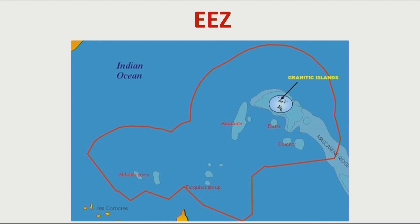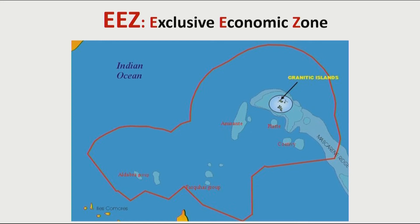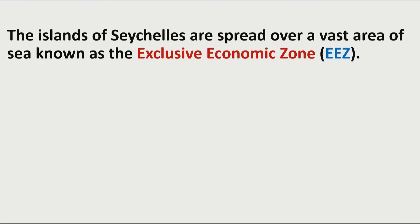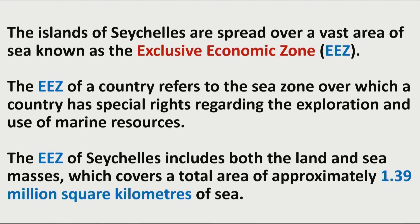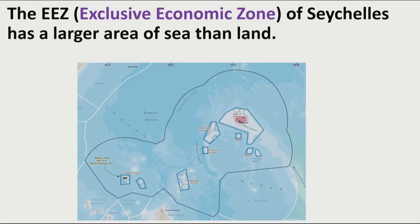This is called the EEZ, which stands for Exclusive Economic Zone. The islands of Seychelles are spread over a vast area of sea known as the Exclusive Economic Zone. The EEZ of a country refers to the sea zone over which a country has special rights regarding the exploration and the use of marine resources. The EEZ of Seychelles includes both land — our different islands — and the sea, which covers a total area of approximately 1.39 million square kilometers of sea.